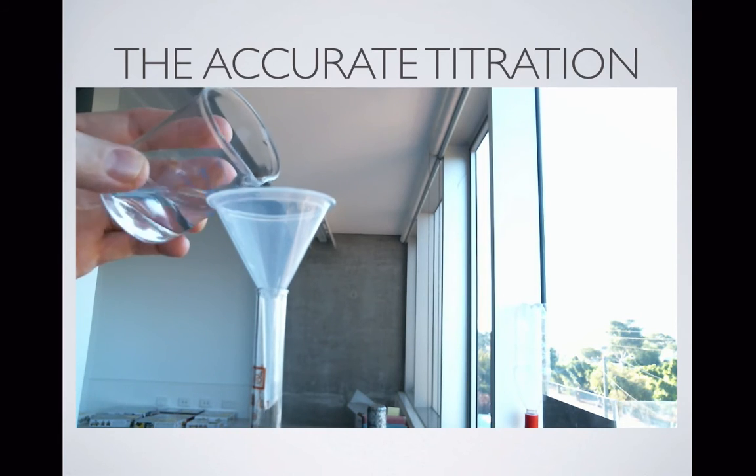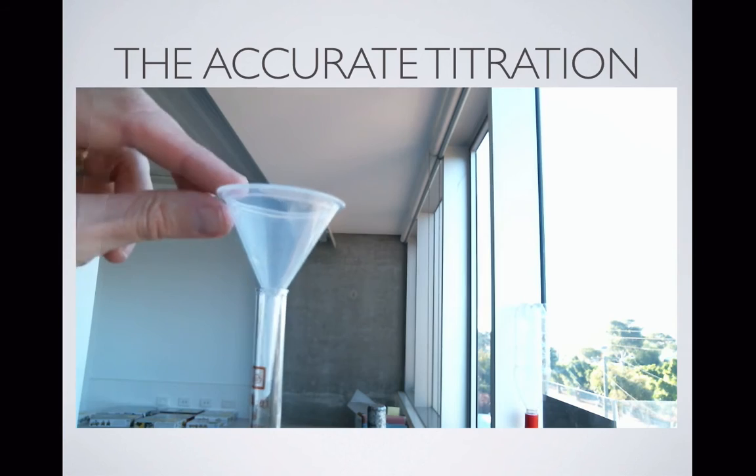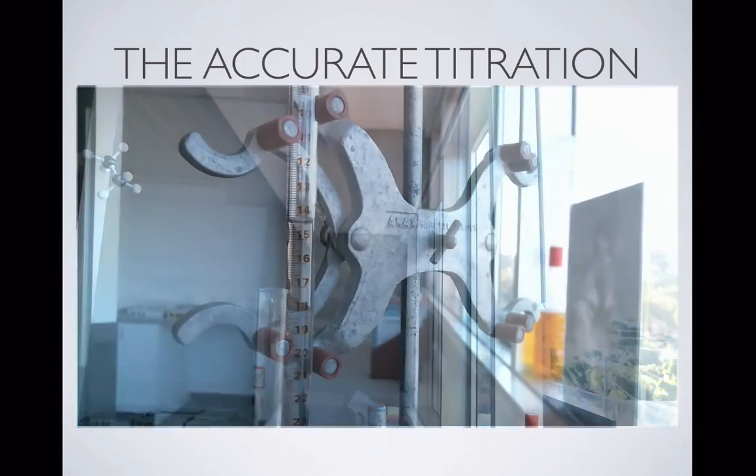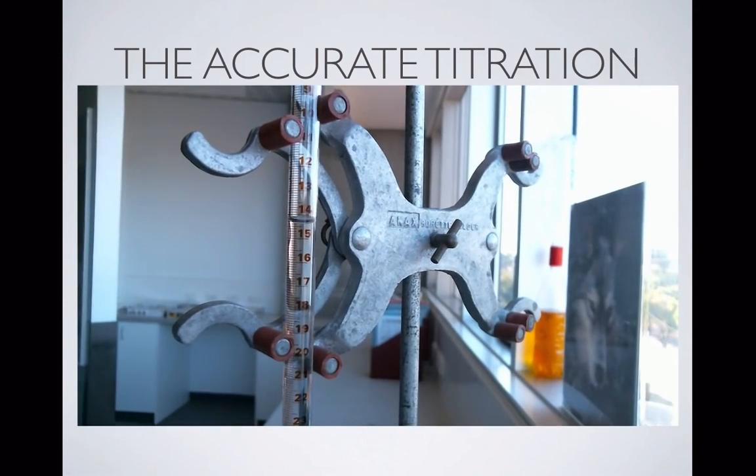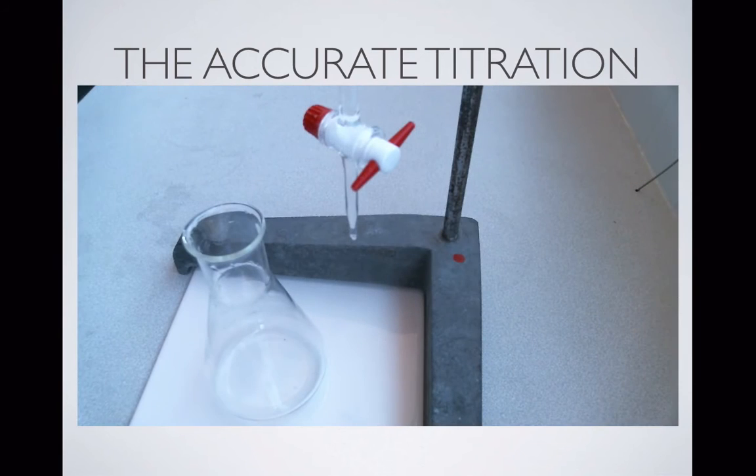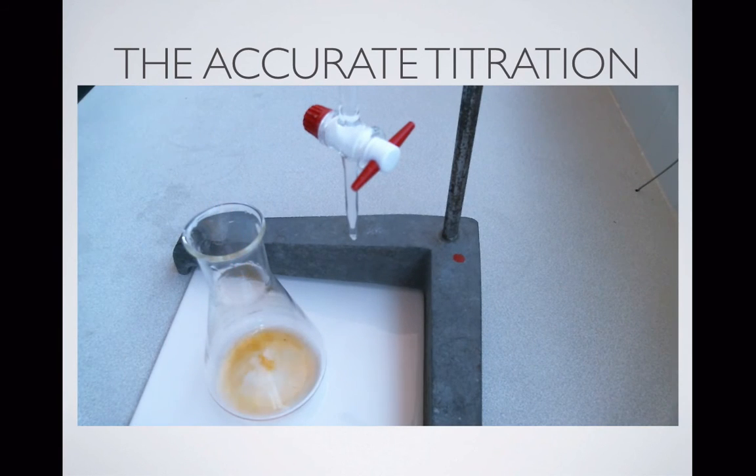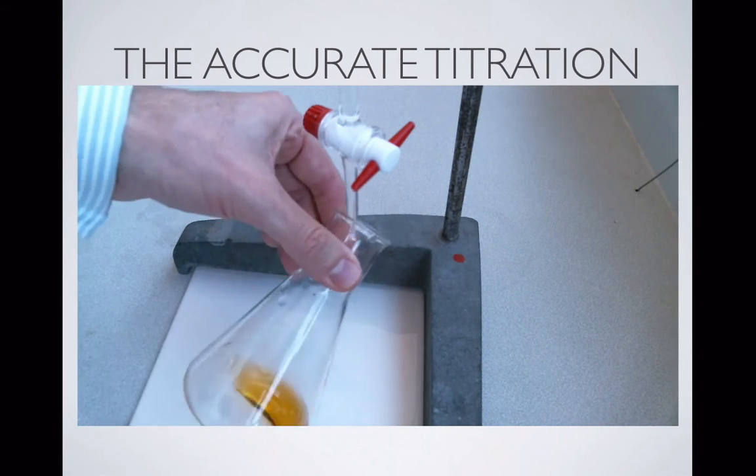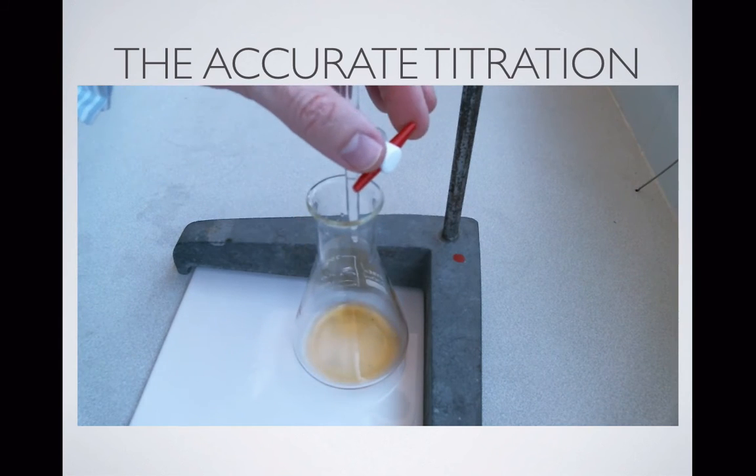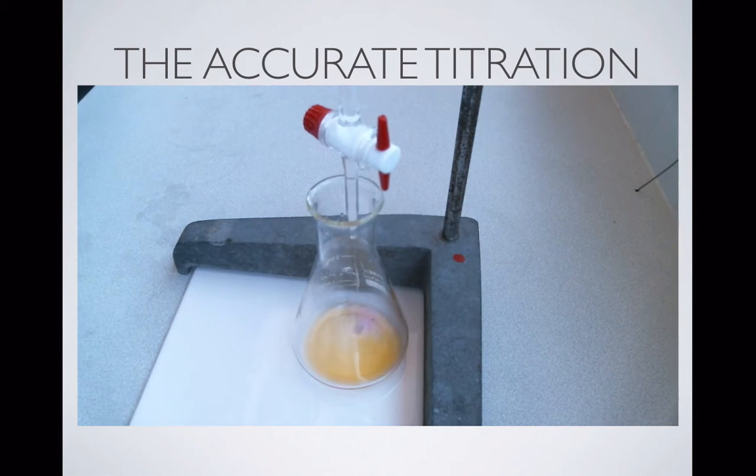But once we've finished doing that, of course we're going to remember to take our funnel out of the top because we don't want drops falling in. We're going to note our initial reading nice and accurately this time. Add a few drops of indicator and we can start titrating. Now the nice thing is, if we've done a rough titration, is that we know that we can add quite a lot of liquid straight away without worrying that we're going to overshoot the mark.